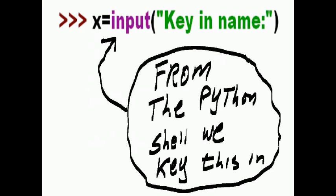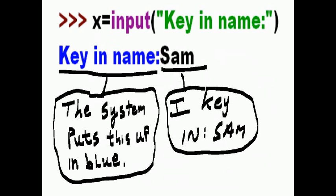We key that in, hit enter, and then the system puts this up in blue: key in name. And then I key in the name Sam and hit enter.